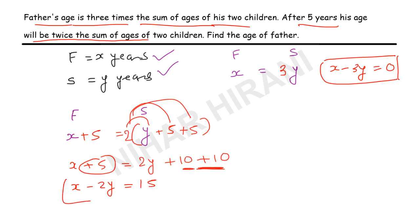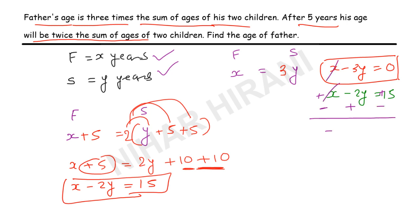Now solving the two equations: equation one is x - 3y = 0 and equation two is x - 2y = 15. Subtracting equation two from equation one: changing signs and cancelling, we get -3y + 2y = 0 - 15, which gives -y = -15.